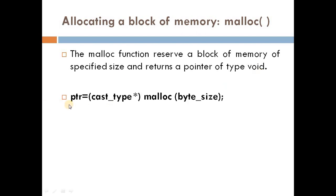The syntax is: pointer = (cast_type *) malloc(byte_size); where cast_type is any basic data type such as integer, float, character, long, or double. PTR is the pointer variable whose data type will be whatever you specify as the cast type. The malloc function returns a pointer to an area of memory with the specified byte size.